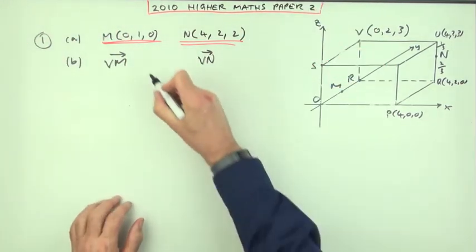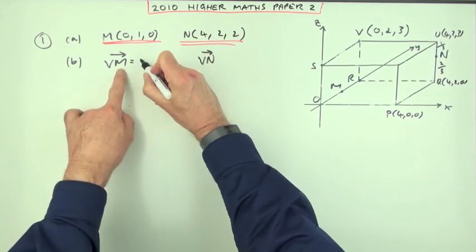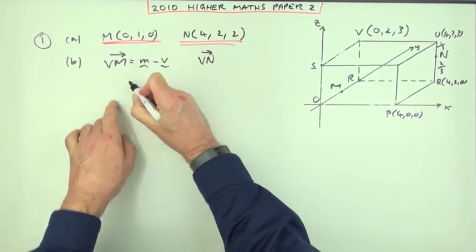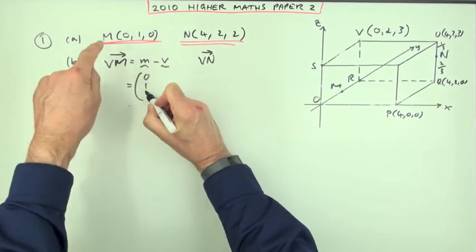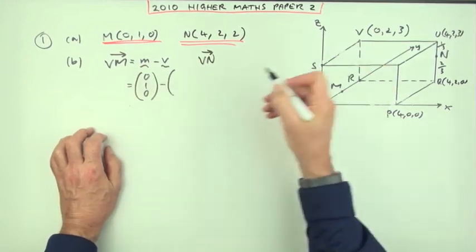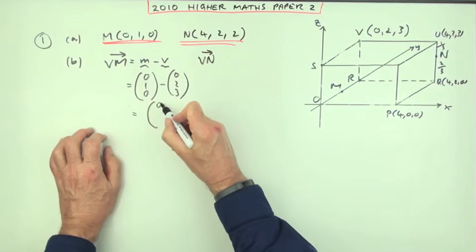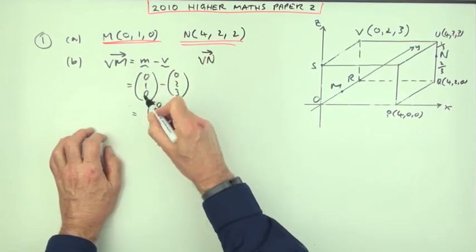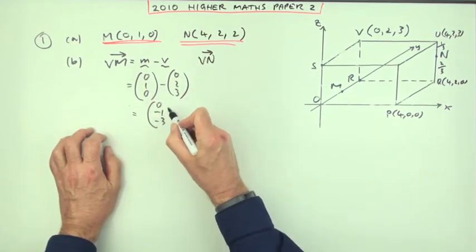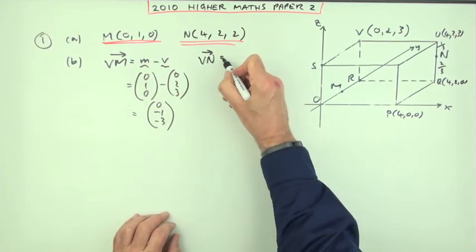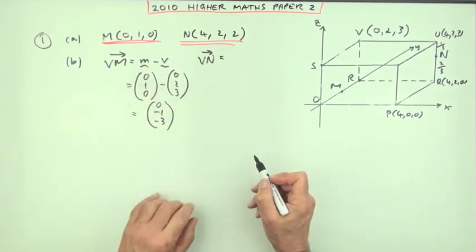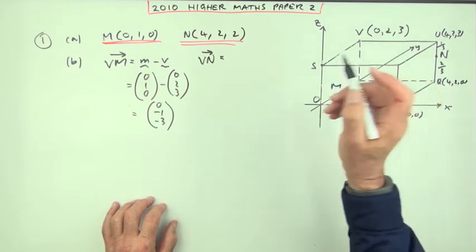But you'd probably be too scared to do that. So you'd go through this whole routine and say, well that's M minus V. So that's zero, one, zero, minus zero, two, three, which is nothing take away nothing, one take away two, nothing take away three, which is of course the same thing. All you're doing is explicitly stating the subtractions you just did naturally.